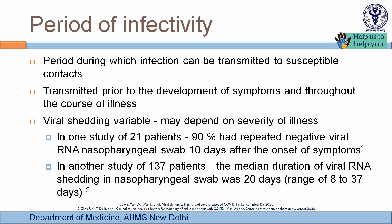Studies on viral shedding are ongoing and show variable results. In one study of 21 patients, 90% had negative nasopharyngeal swabs after 10 days of symptoms — these were patients with mild disease. In another study of 137 patients, duration of viral shedding in nasopharyngeal swabs was as long as 20 days, with a range of 8 to 37 days. This has important implications for isolation and disease containment.